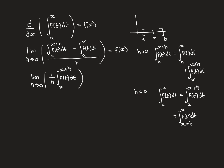When h is less than 0, x plus h is no longer bigger than x — it's actually less than x, to the left of x. So there's no point splitting the integral from a to x plus h using additivity. Instead, we split the integral from a to x: we write it as the integral from a to x plus h of f(t) dt — remembering that x plus h is now less than x — plus the integral from x plus h to x of f(t) dt. That works because x plus h is to the left of x.